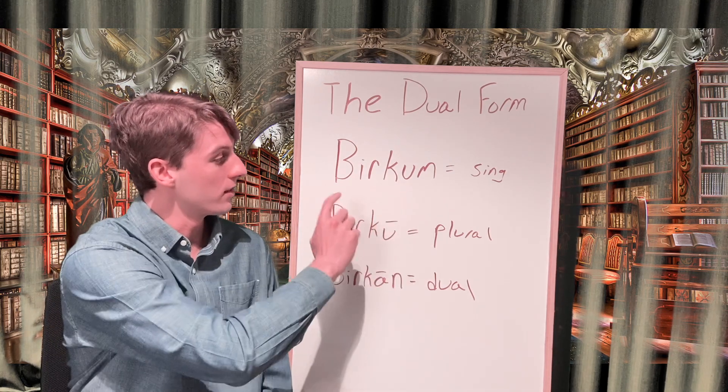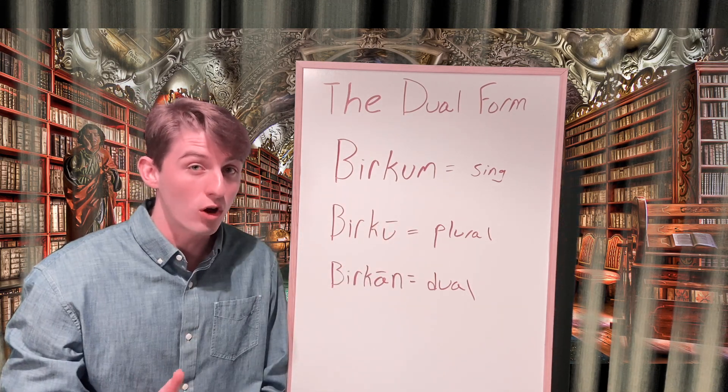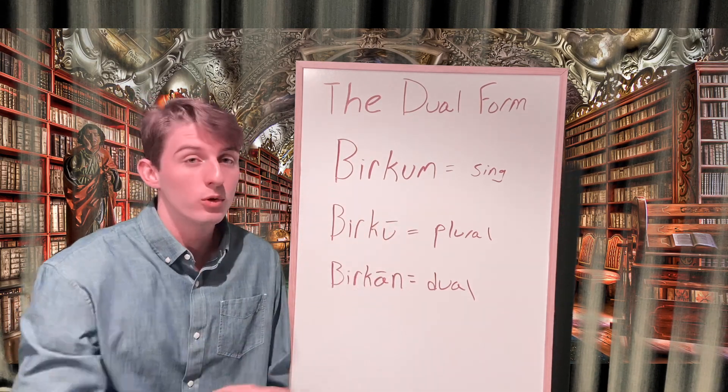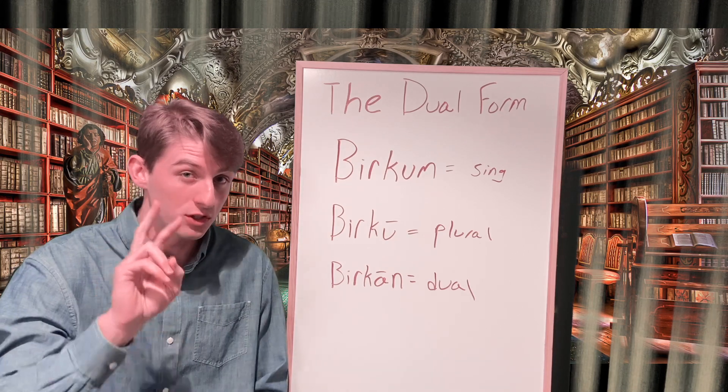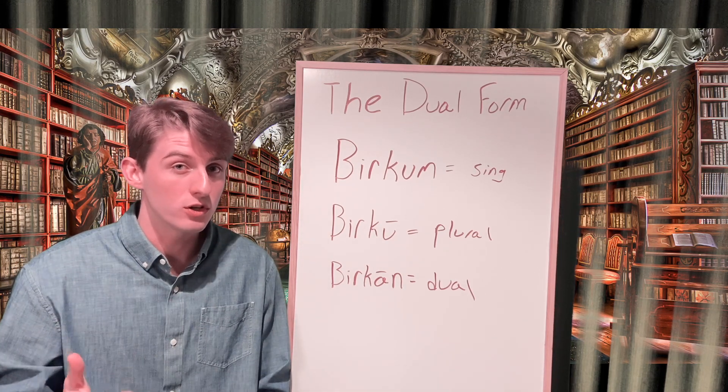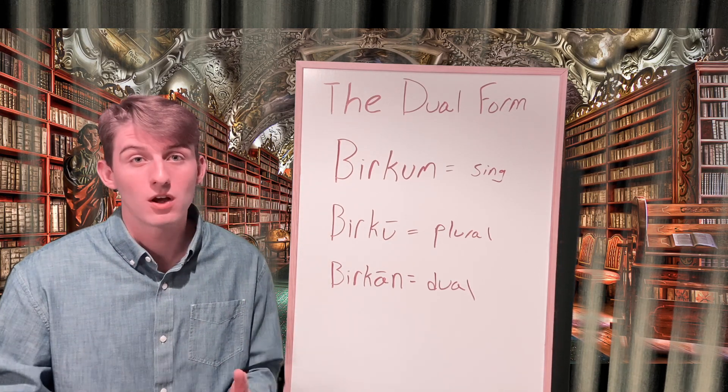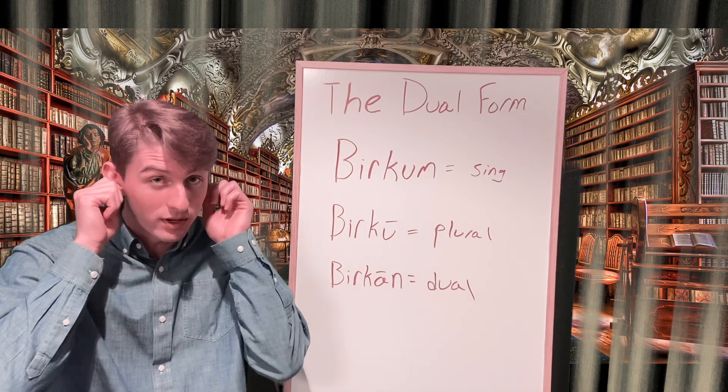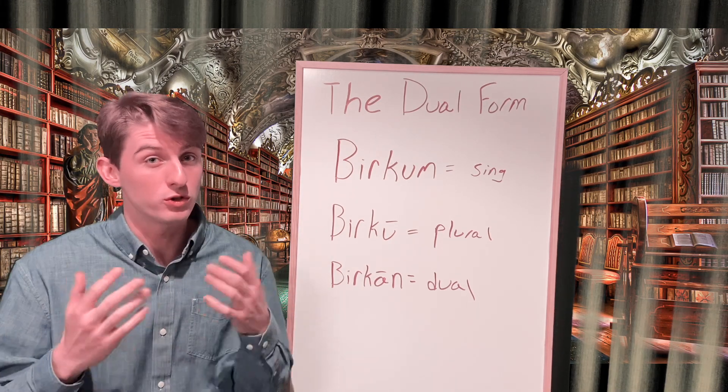In addition to the singular and the plural, the Akkadian language also featured a dual form, which was used to reference specifically two of something. This was often used when talking about different body parts where you have two appendages, like two ears, two eyes, or two hands.